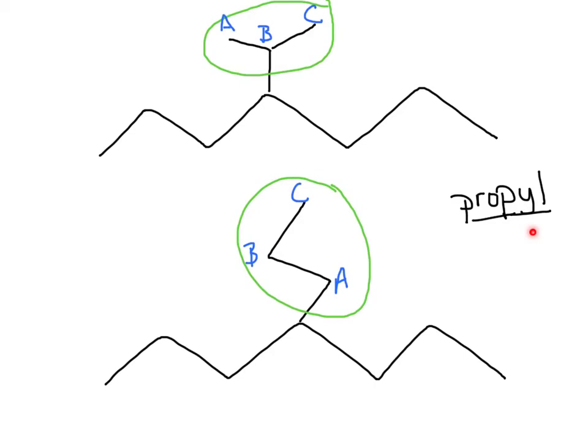now instead of that connecting to carbon A at the end of the molecule, now it can connect to carbon B in the middle of that molecule. And what I see is that I call this group isopropyl.